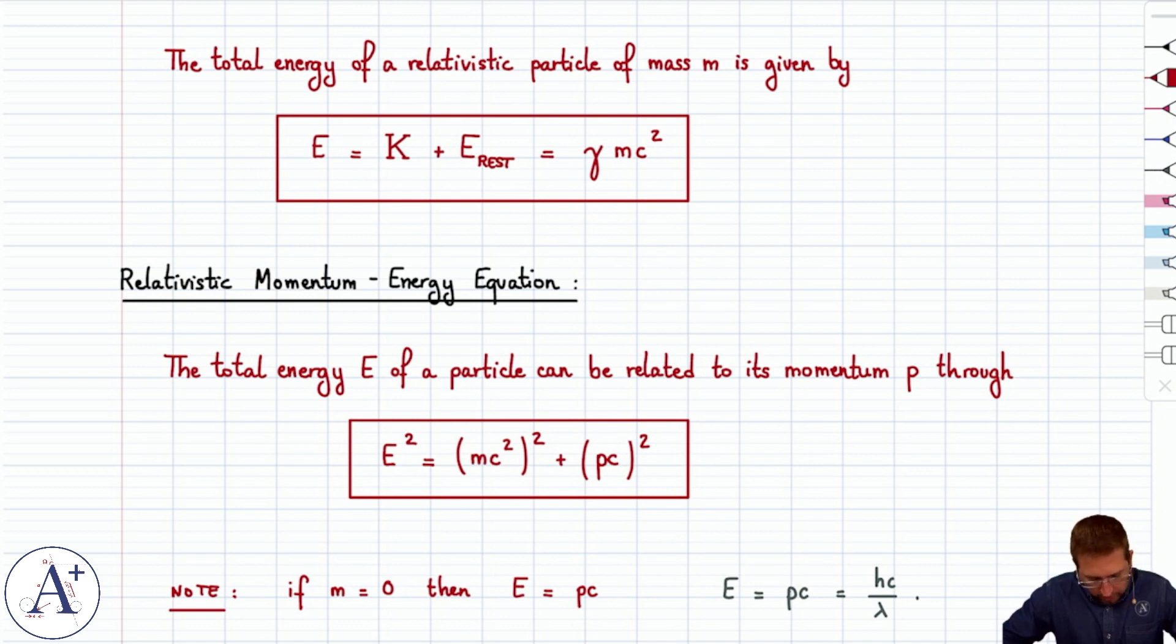But in general, you have a relationship between the total energy and the momentum p. That's the relativistic momentum energy equation. And in the case of a particle that has no mass, then it still holds, it just simplifies to E equals pc.